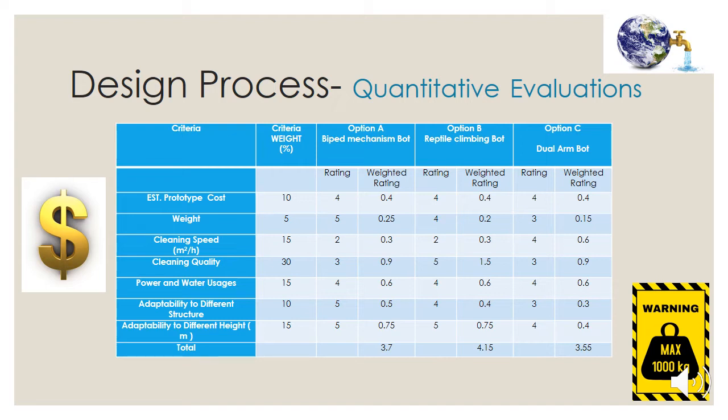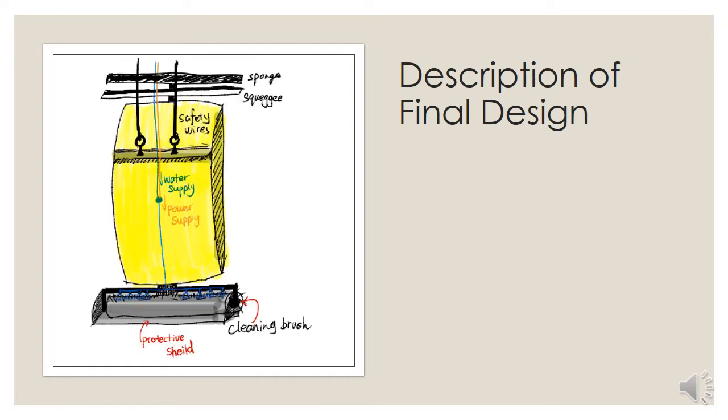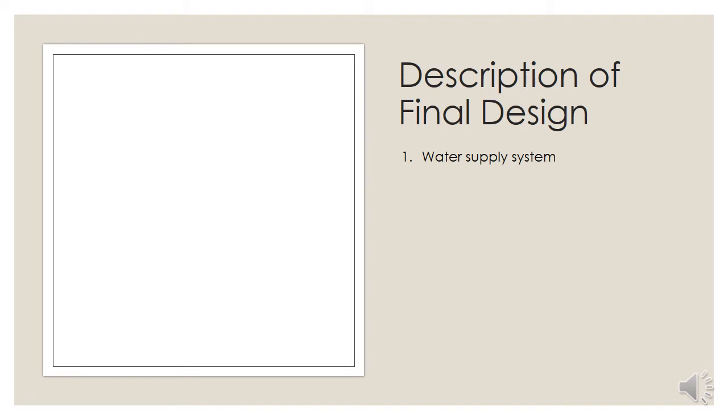My partner Lin Fei will be describing the final design that we arrived at. I am going to talk about the description of final design. The appearance of the machine is shown in the picture. There is a water supply tube, a power supply cable, and furthermore there is a safety cable to ensure the machine won't fall to the ground if the suction cup systems cannot work properly. The overall structure of our robot consists of two main parts: water supply system and the mechanical structure.